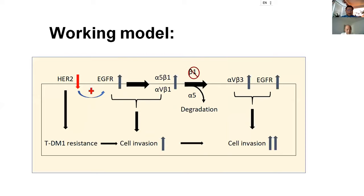This is a quick working model. When HER2 is downregulated — shown by the red arrow — because cells become resistant after chronic exposure to HER2-targeted therapy TDM1, we have EGFR upregulated and integrin molecules upregulated. That can significantly increase cell invasion activity. When you knock down beta-1 integrin, alpha-V integrin is upregulated, and together with EGFR signaling, cell invasion activity increases.